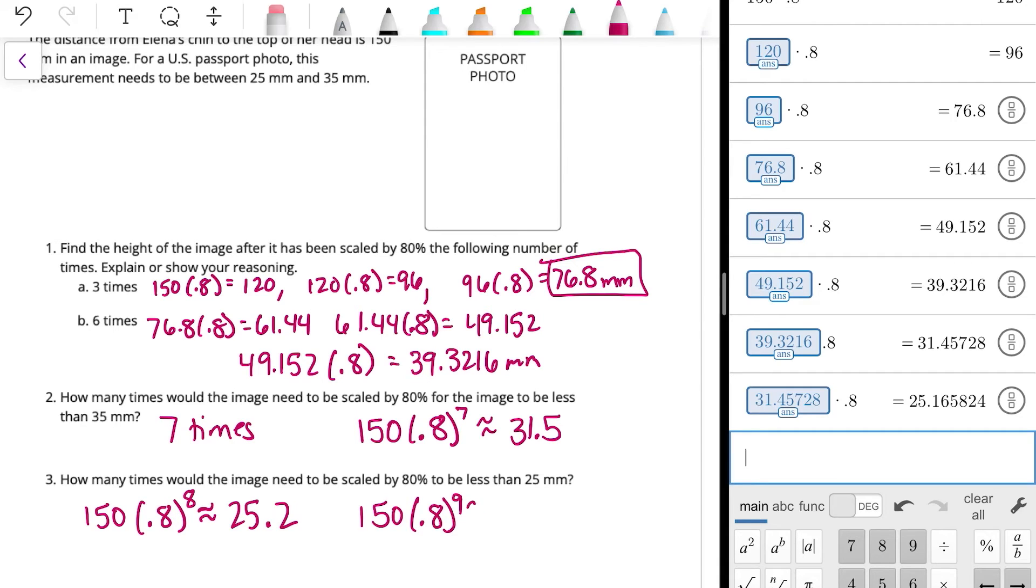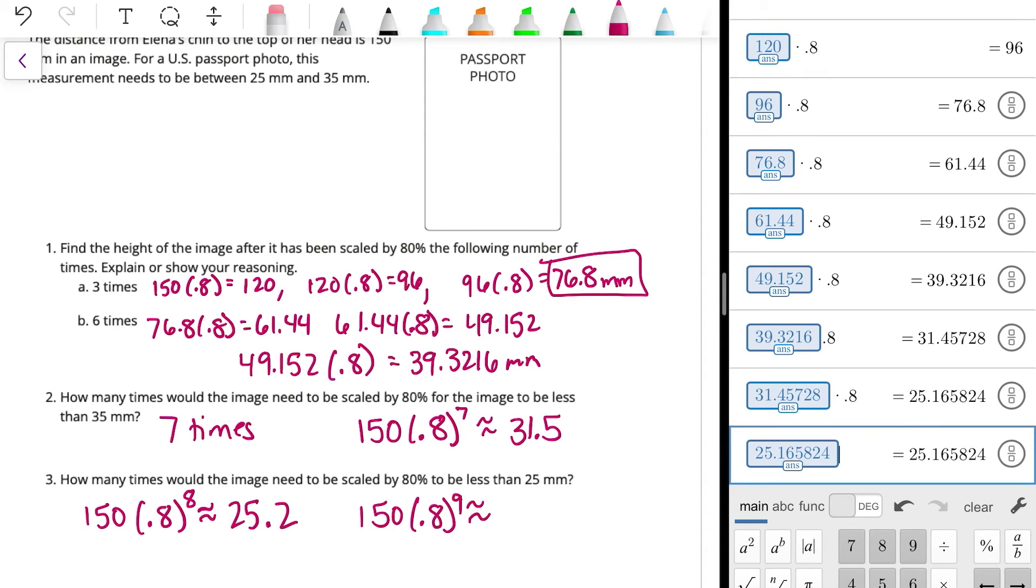So let's try nine times. And that is going to give us, plug in our answer, and then multiply that by 0.8, and we get about 20.1. And so if we resize it nine times, if we rescale it 80% nine times, then we'll get below 25 millimeters.